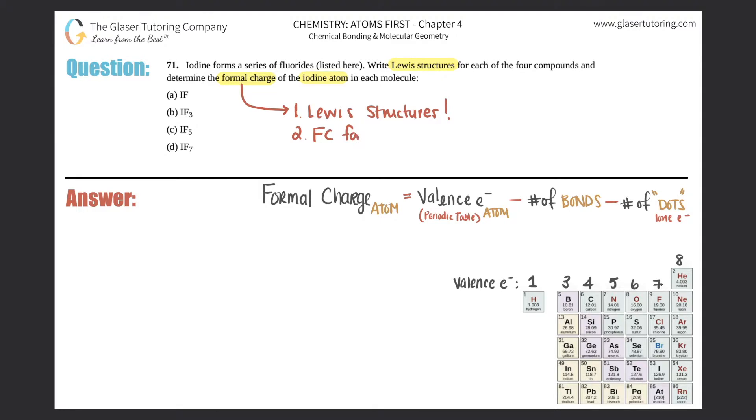Second thing is we just need to know the formal charge formula, which I provided here. It's a little bit different from the one in your textbook. I think that this one is easier to understand. So let's get down to it. First we got to write out the Lewis structures and then from there we just have to find the formal charges of the iodine.